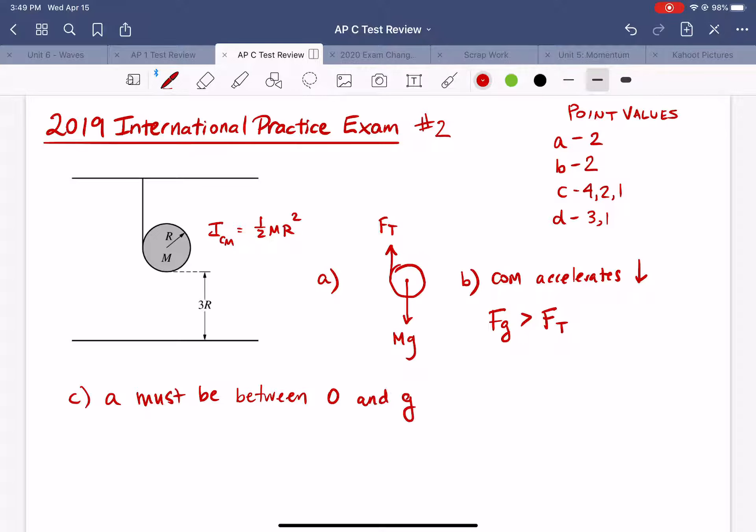Obviously it's not going to accelerate in an upward direction so A is going to be positive if we make down our positive direction and it cannot accelerate down faster than the acceleration due to gravity because there's a tension force pulling it upward. So it's going to be somewhere between these two values.